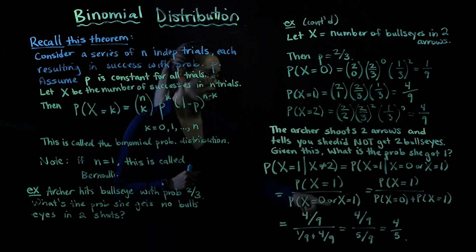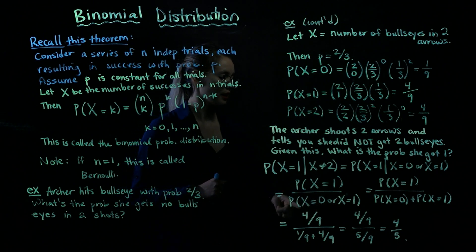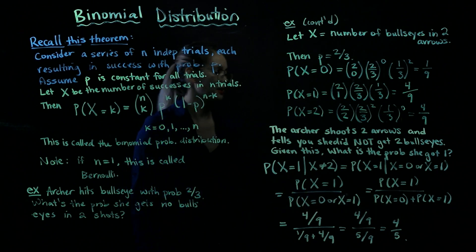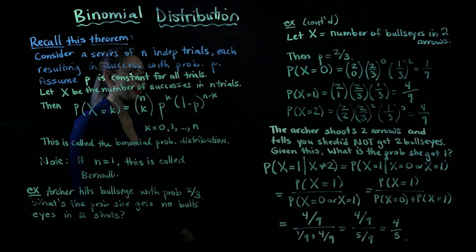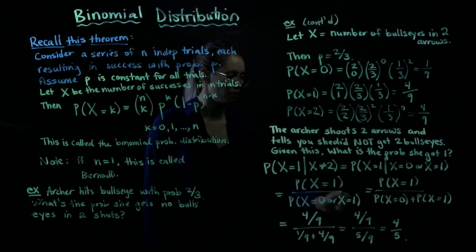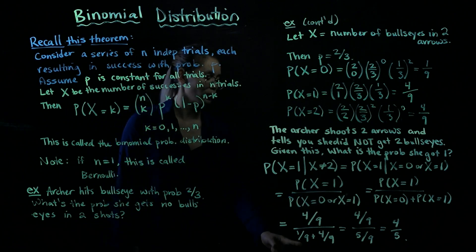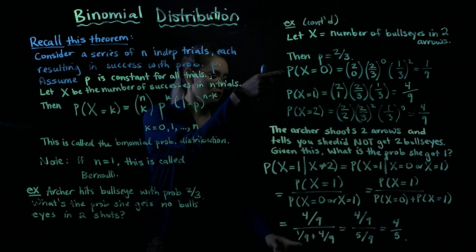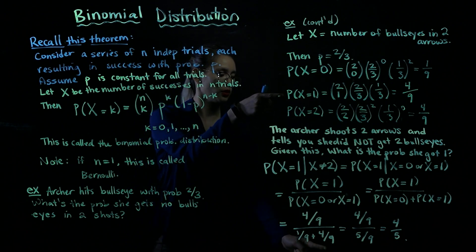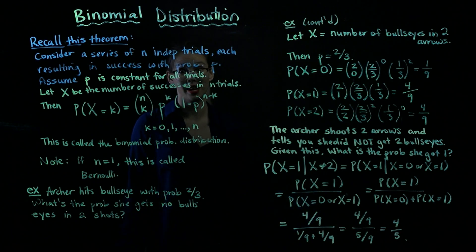So when we see the or here, that means we can split this into two probabilities. The probability x equals zero plus the probability x equals one. And we already calculated these probabilities up here. So we can go snag them, put them in. The numerator is four ninths. The probability x equals zero is one ninth. The probability x equals one is four ninths. So we have four ninths divided by five ninths, which is four fifths or 80%.